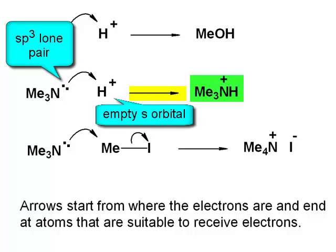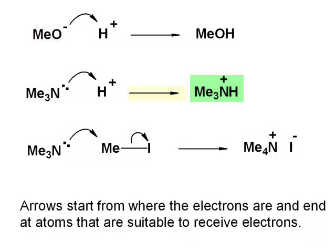Then you write the reaction arrow and the product from that. And then you check the charges. When the first example, we had anion plus cation to neutral. Here we have a neutral compound reacting with a cation. So the product must be positively charged. So how do we identify which atom in this product is carrying the positive charge? The atom which has given the electrons away is the atom which now will have the positive charge.